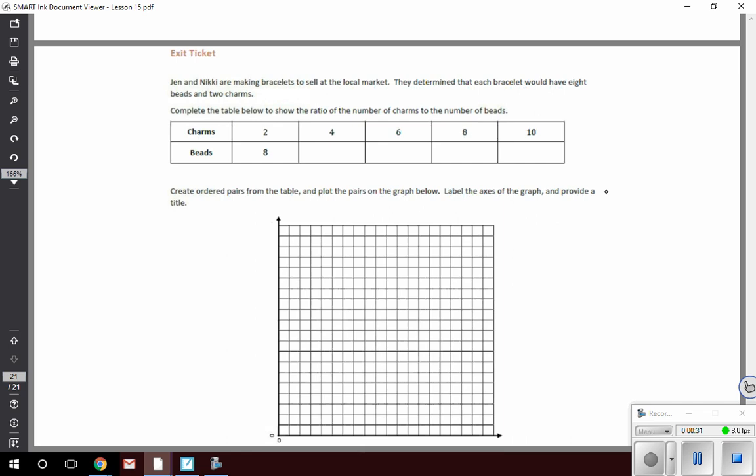Jen and Nikki are making bracelets to sell at the local market. They determined that each bracelet would have two beads and two charms. Complete the ratio table below to show the ratio of the number of charms to the number of beads. So this specifically says they want it to be charms to beads. Charms is going to come first before beads.